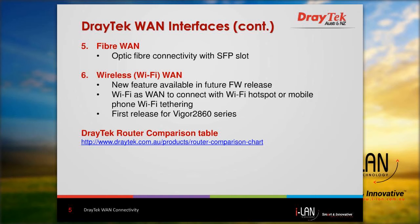The last WAN type is the new wireless WAN or Wi-Fi WAN feature, currently still under testing in DrayTek. It allows the user to connect the router to any Wi-Fi hotspot or Wi-Fi tethering from a mobile phone. This is useful during an emergency when all wired connections are dropped and no 4G USB dongle is available. Please also refer to the list of DrayTek Vigor routers for WAN comparison and combination.